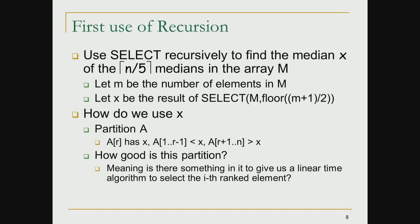Here is the first use of recursion: we look at the array m and ask for the median of the n/5 elements in m. The recursive call is select(m, floor((m+1)/2)), and let the returned value be x. We then partition the array a into two parts around the element x. Before analyzing how to do this, let us analyze how good this partition is — specifically, what properties ensure a linear time algorithm to find the ith ranked element.